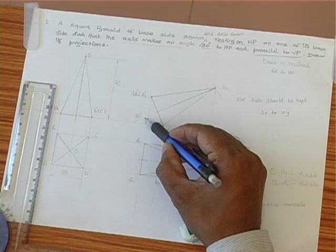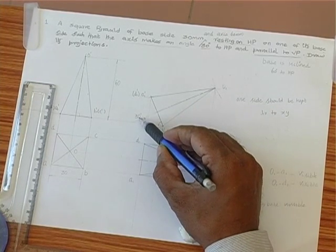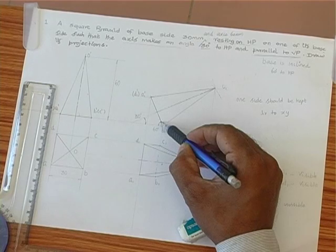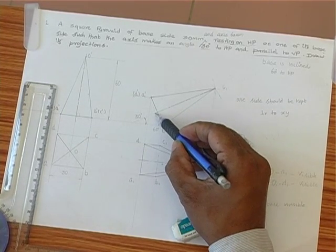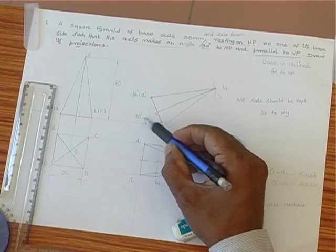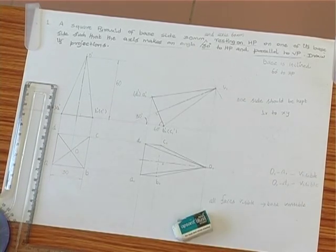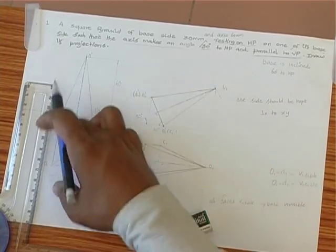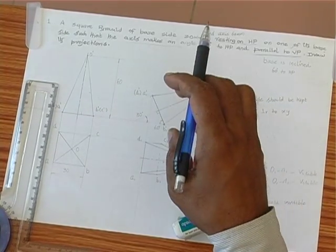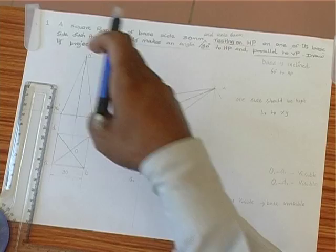We have made this 30 degrees. Instead of making this 30, we have provided 60 because axis and base are at 90 degrees, this 60 becomes obvious, 30 here it's done. So therefore this particular answer ensures the exact requirement of this problem.